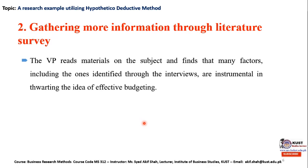The vice president also gathers more information through a literature survey. The VP reads material on the subjects and finds that many factors — including those identified through interviews with managers and staff — are instrumental in thwarting or preventing effective budgeting. Through this literature review, the vice president studies published material available in digital libraries and journals and finds that various factors can prevent effective budgeting in organizations.